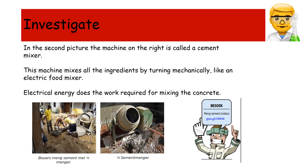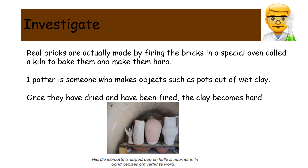In the second picture, the machine on the right is called a cement mixer. This machine mixes all the ingredients by turning mechanically, like an electric food mixer. Electrical energy does the work required for mixing the concrete.